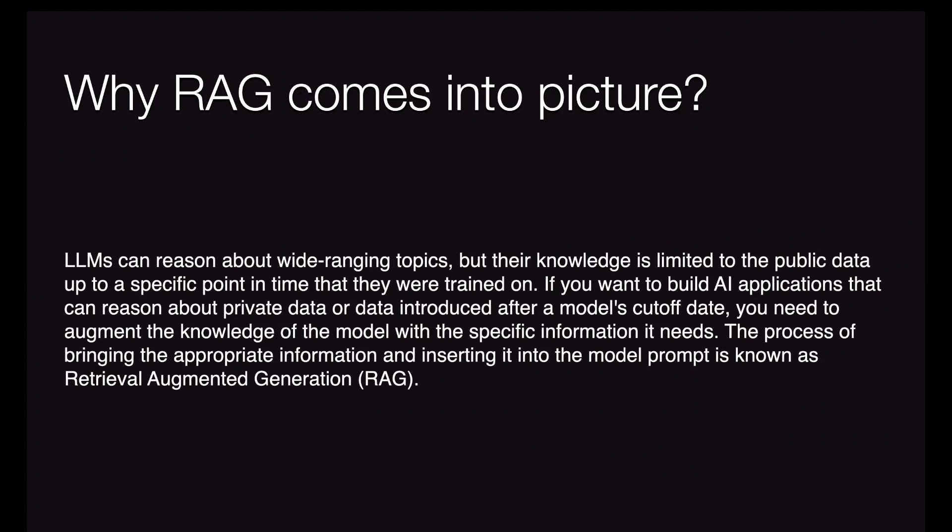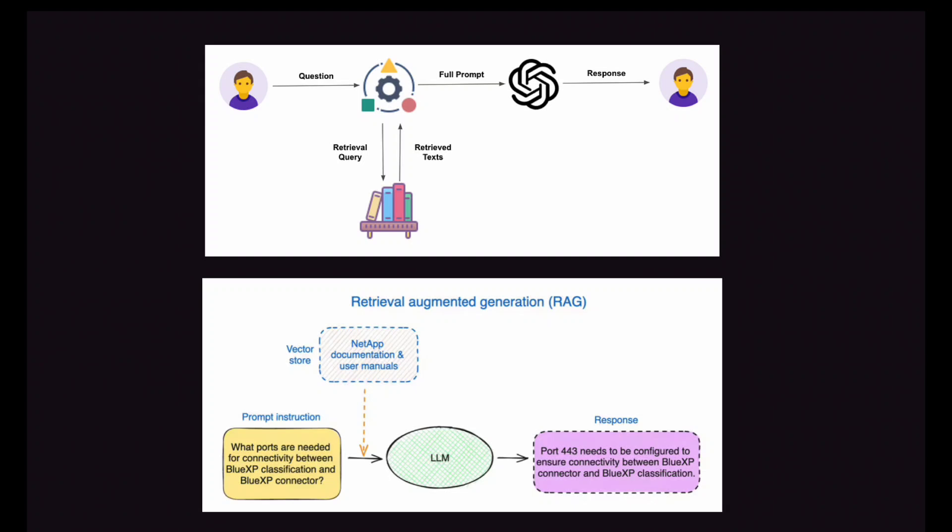So the LLM model does not only get the prompt you are asking — it will also get the augmented data, including the query from the RAG database. Here is a simple flow: you ask the question, it goes to RAG, RAG retrieves and augments the data, then your prompt goes along with the database query from RAG, and then the LLM model responds to the user.